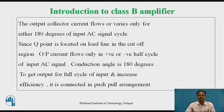In Class B Power Amplifiers, the output collector current flows or varies only for either 180 degrees of the input AC voltage signal waveform. Since the DC operating point of the amplifier using the amplifying device transistor is located on the load line in the cut-off region, output current flows only for either the positive half-cycle or negative half-cycle of the input AC voltage signal.